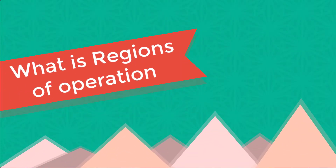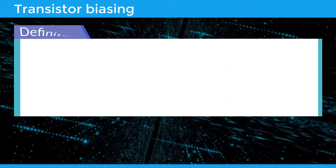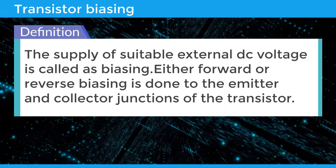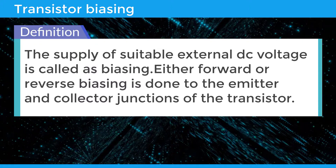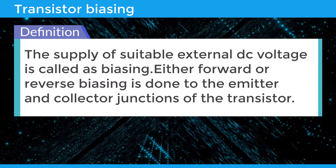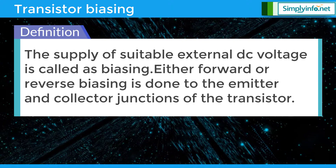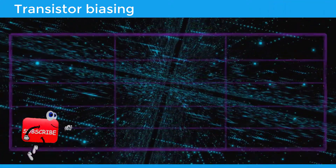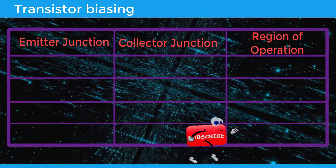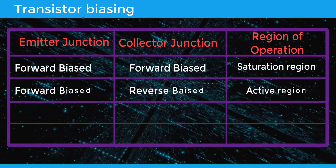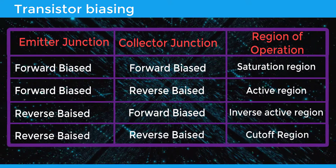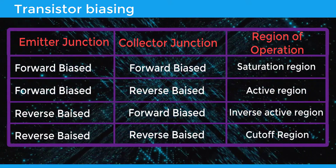Transistor biasing refers to the supply of suitable external DC voltage. Either forward or reverse biasing is done to the emitter and collector junctions of the transistor. These biasing methods make the transistor circuit work in four kinds of regions: active, saturation, cutoff, and inverse active region.